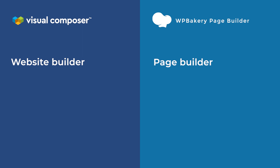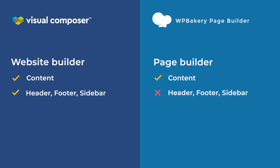Both plugins take care of the content part of your WordPress page, yet Visual Composer allows designing headers, footers, and sidebars besides the theme default layout. Visual Composer gives you additional layout options. Both plugins have an API which allows creating custom elements for your projects, themes, and add-ons.